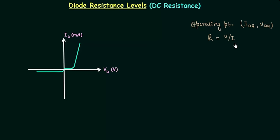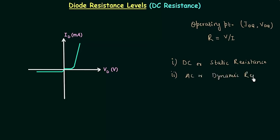The type of applied voltage will define the resistance levels. If you apply DC voltage the resistance will be different, and if you apply AC input the resistance will be different, because in case of AC input the voltage and current will be alternating. We will learn three resistance levels: the first is DC or static resistance, the second is AC or dynamic resistance, and the third is average AC resistance. In this lecture I will explain DC or static resistance, and in the coming presentations we will complete AC and average AC resistance.